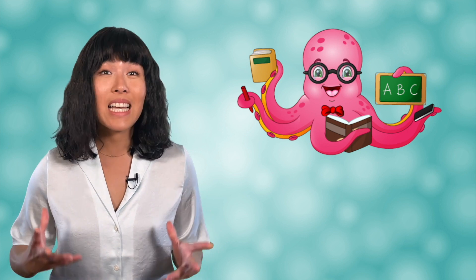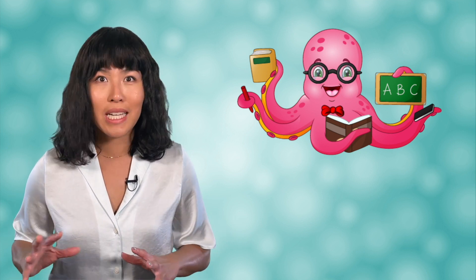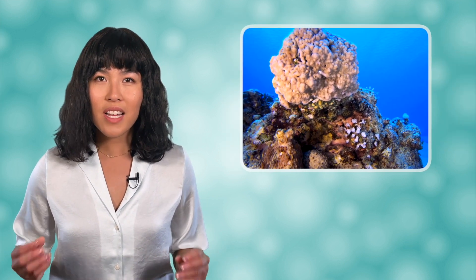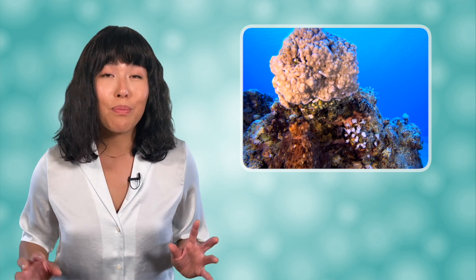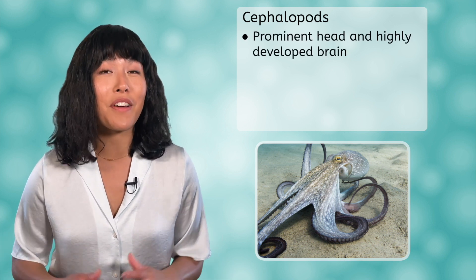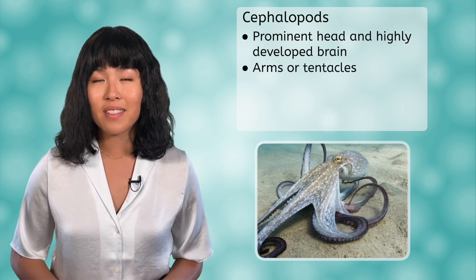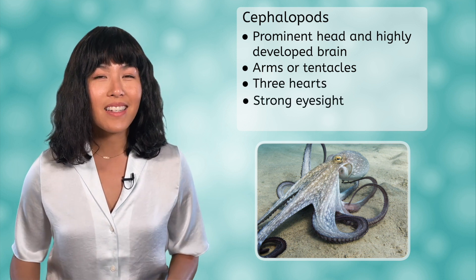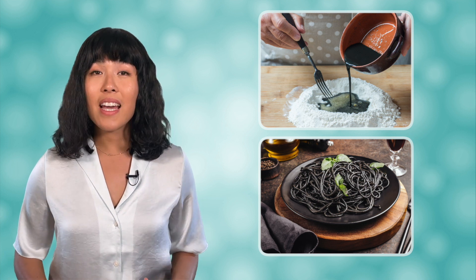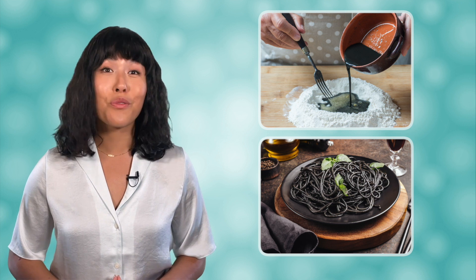Cephalopods are the most intelligent class of invertebrates, due to their highly developed nervous system. They have been seen solving complex puzzles, opening boxes with latches, and unscrewing caps on jars. Their intelligence is also seen in their ability to camouflage and hide from both predators and prey. Key characteristics include a prominent head and highly developed brain, arms or tentacles that evolved from the foot seen in other mollusks, the presence of three hearts, strong eyesight, and the ability to produce ink. Squid ink in particular has been used for centuries in traditional medicine, as pigment, and as writing utensils — and today we use it as food coloring in pasta.